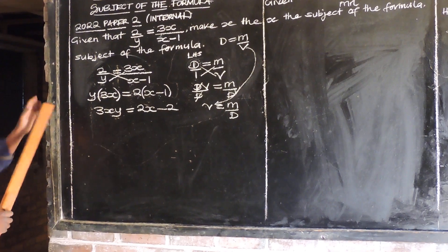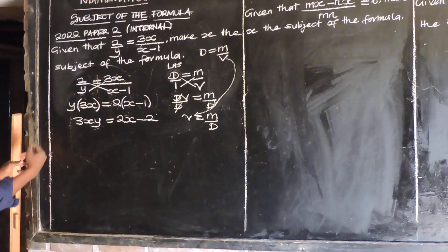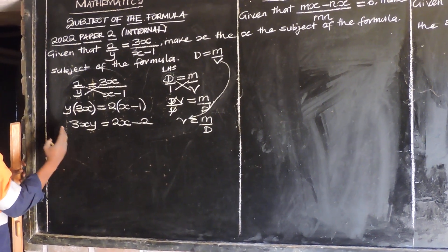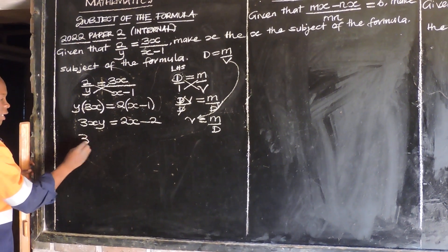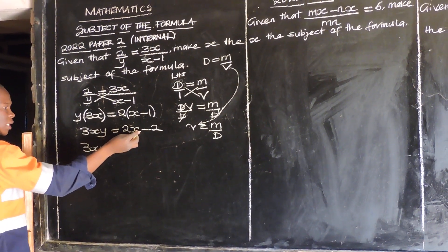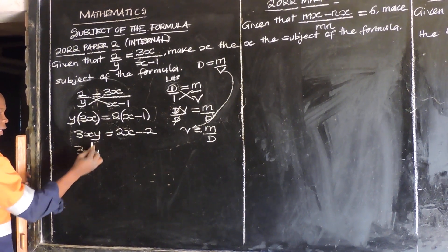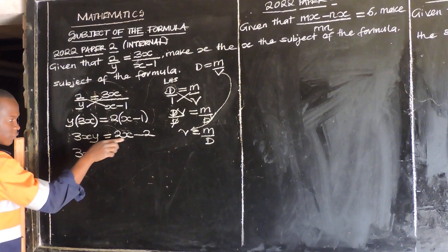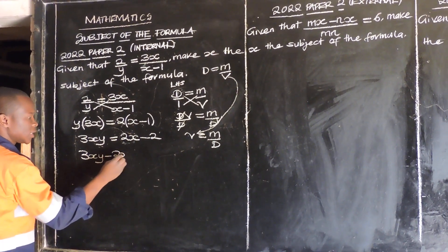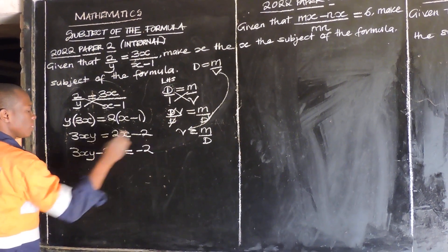Now since we are making x the subject of the formula, we need to group like terms. Terms with x are supposed to be on the left-hand side. So 3xy stays on the left, and 2x transposes to become negative 2x on the left side. So we have 3xy minus 2x is equal to negative 2.